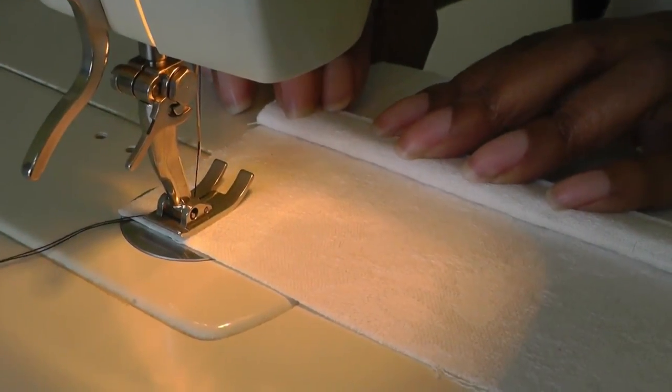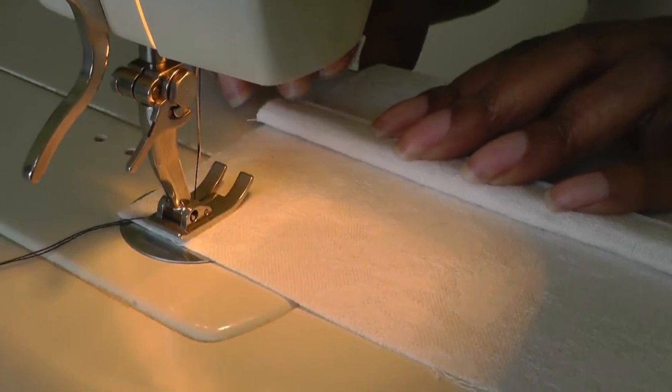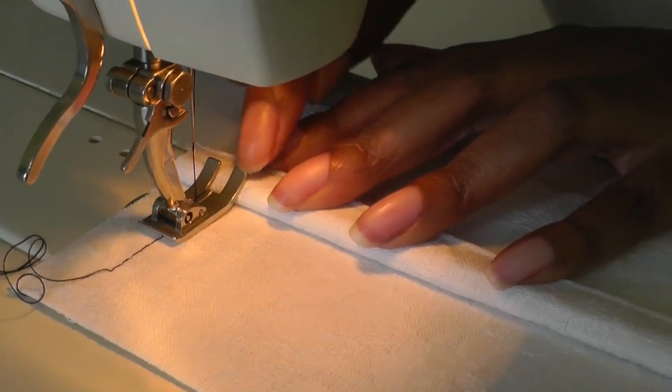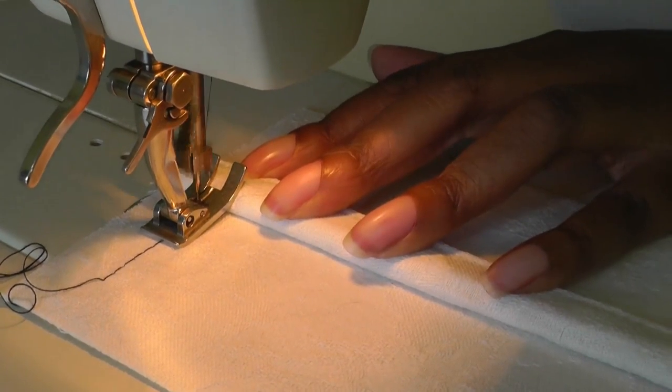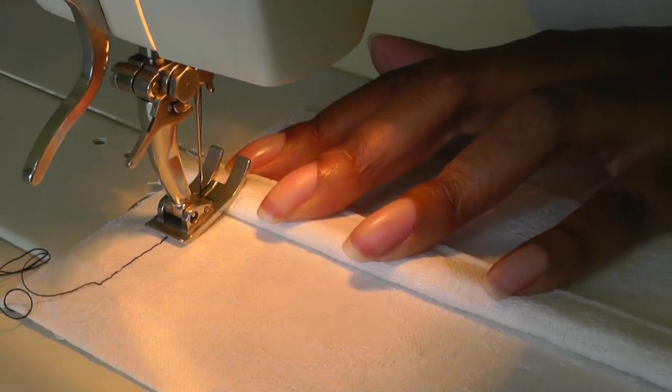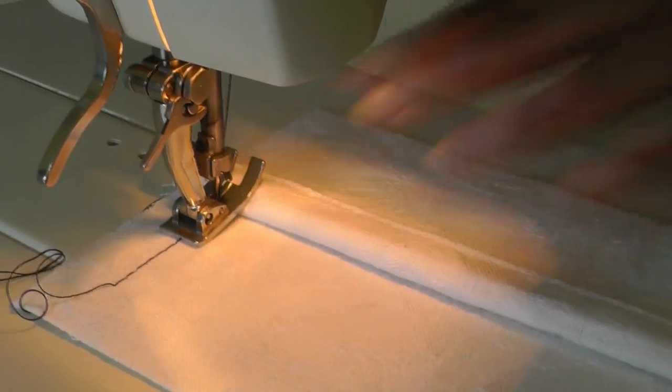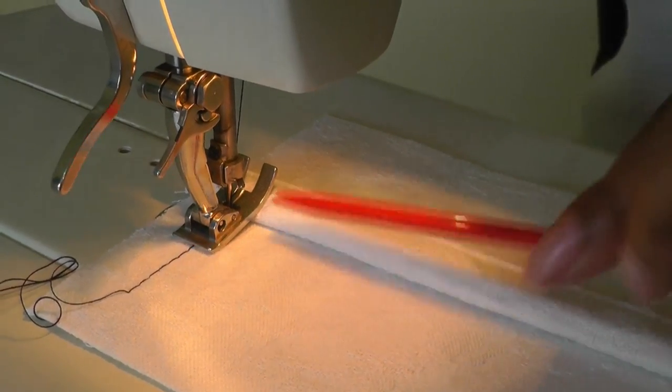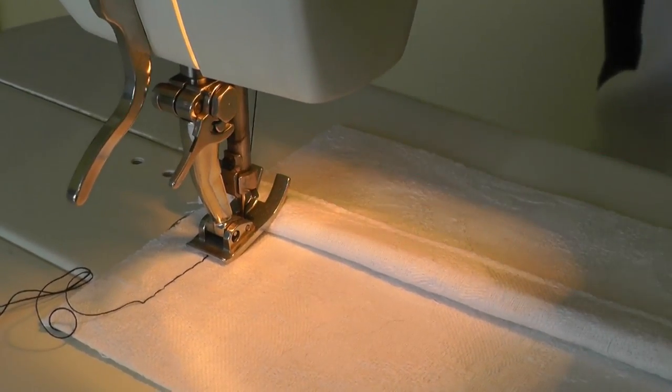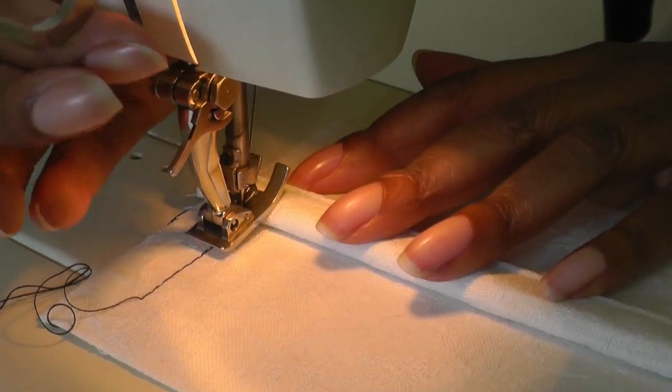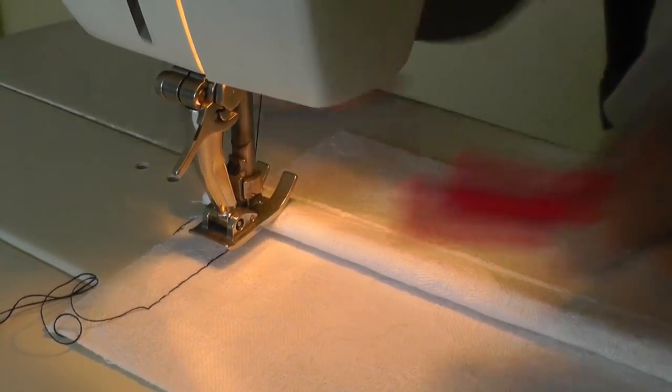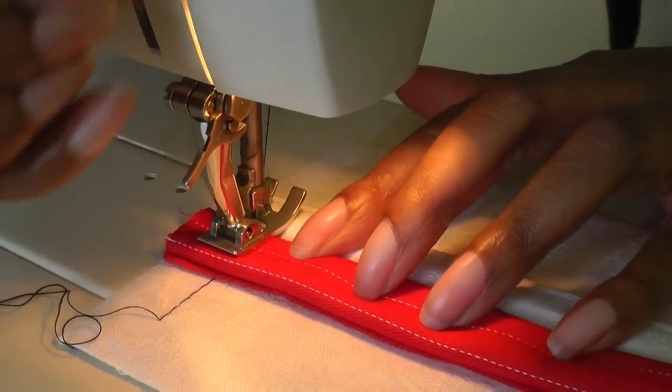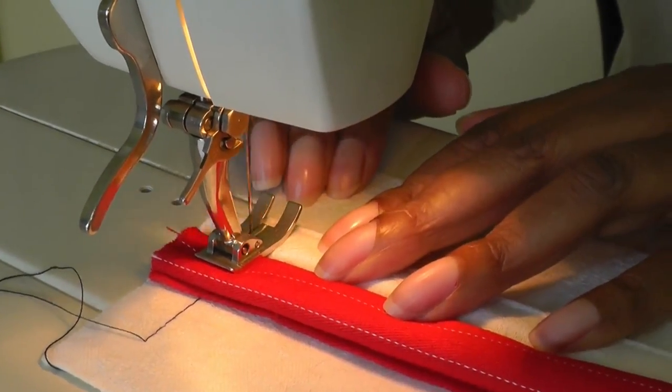As you're sewing the flat area of your fabric and the foot is starting to find it difficult to get over the seam, put your needle down. The foot is in that position with the back on the flat area and the front raised. Bring your foot up, place your wedge under the foot right against the needle, foot down, and then continue sewing.